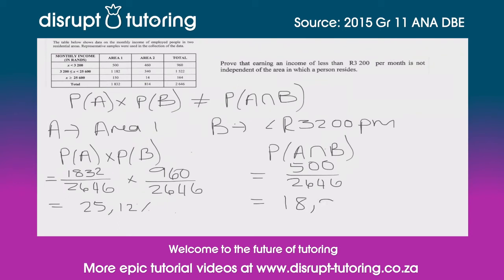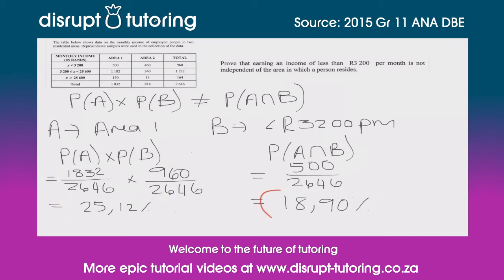What's great about this is we can see that the two percentages do not equal each other — 25.12% versus 18.90% — and because they do not equal each other we can therefore conclude that they are not independent. Fantastic, nicely done, hopefully that helps you out!